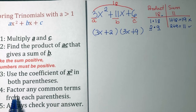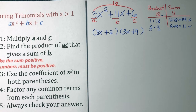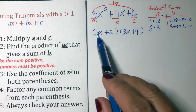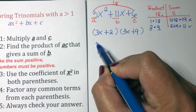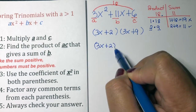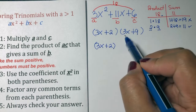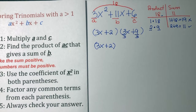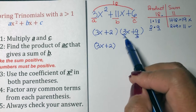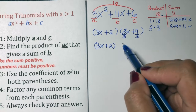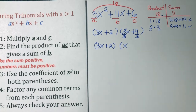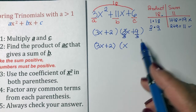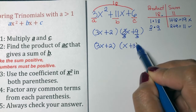The next step is to factor any common terms from each parenthesis. Look at 3 and 2 — there is no common factor because 3 and 2 are prime, so we just copy it. But for 3 and 9, we can still simplify by dividing both by 3. So, 3x divided by 3 is x, and positive 9 divided by 3 is equal to positive 3.